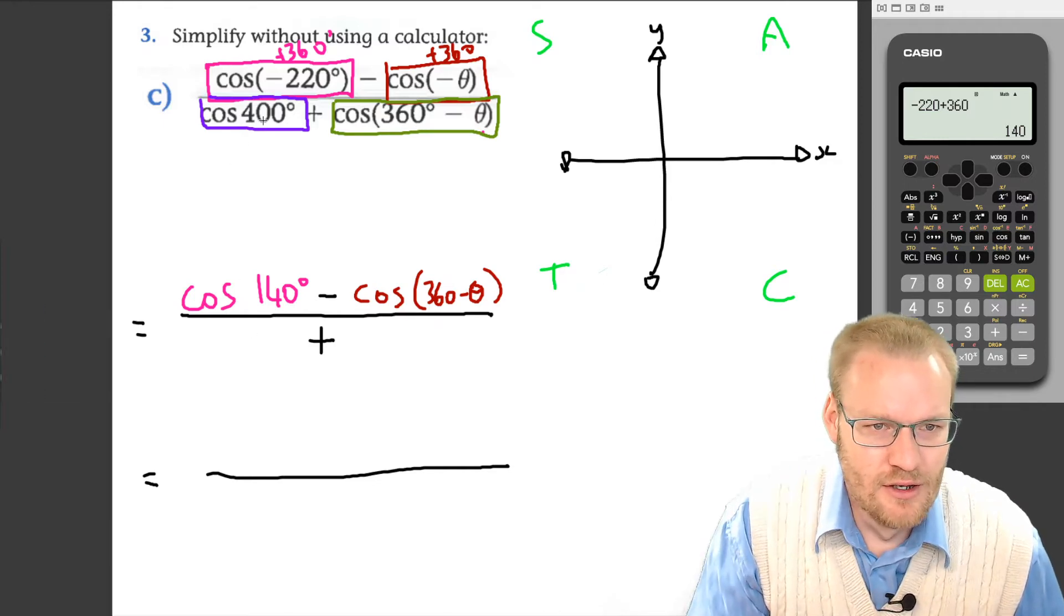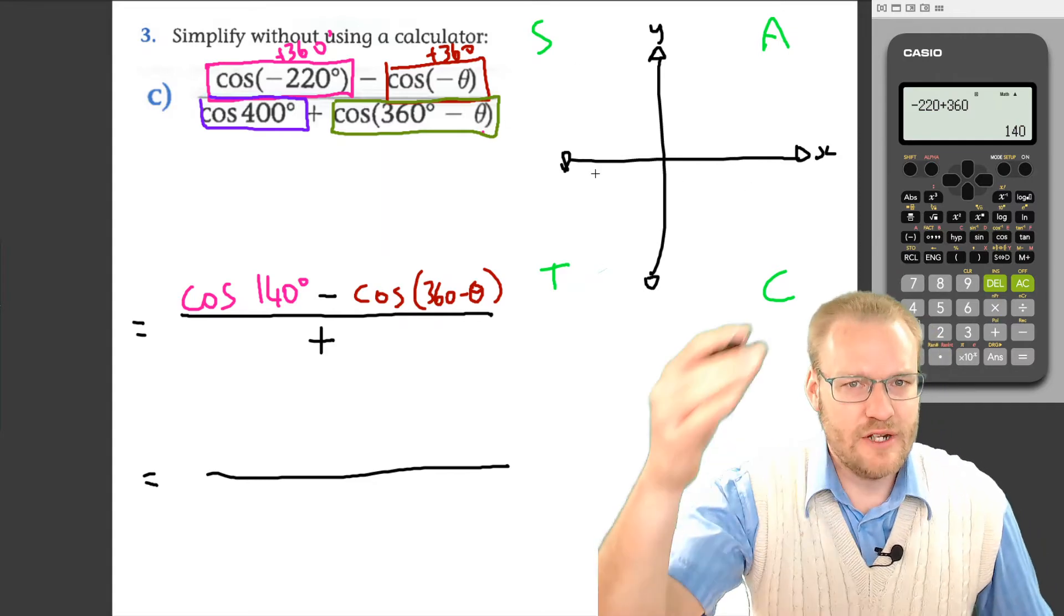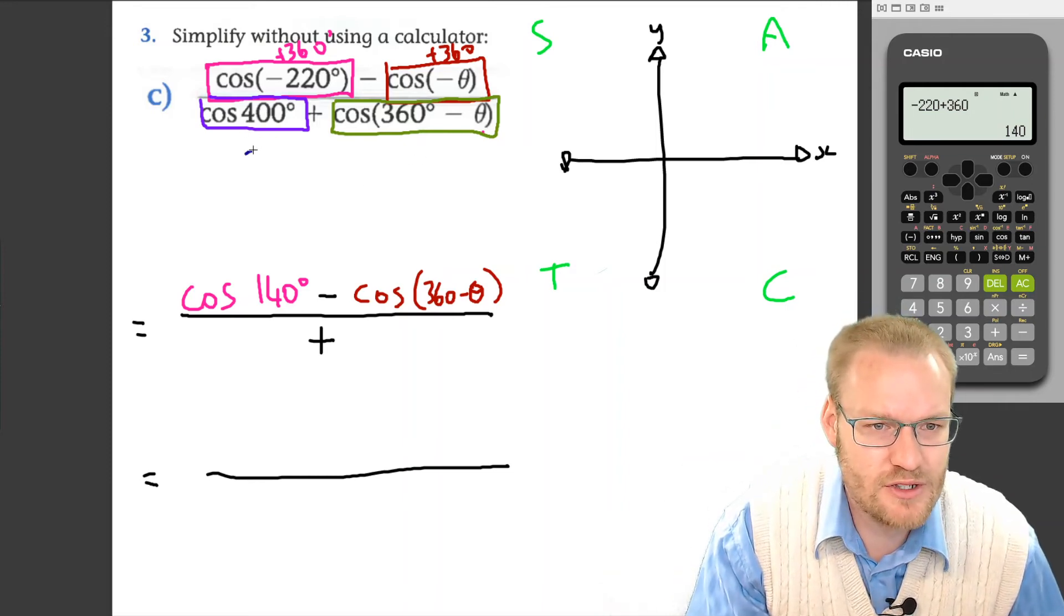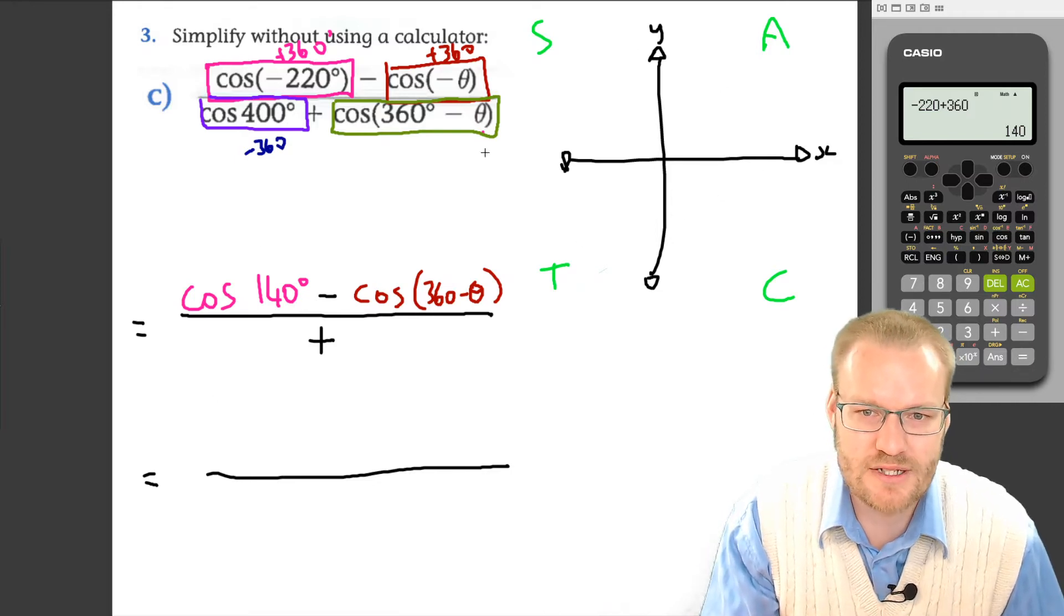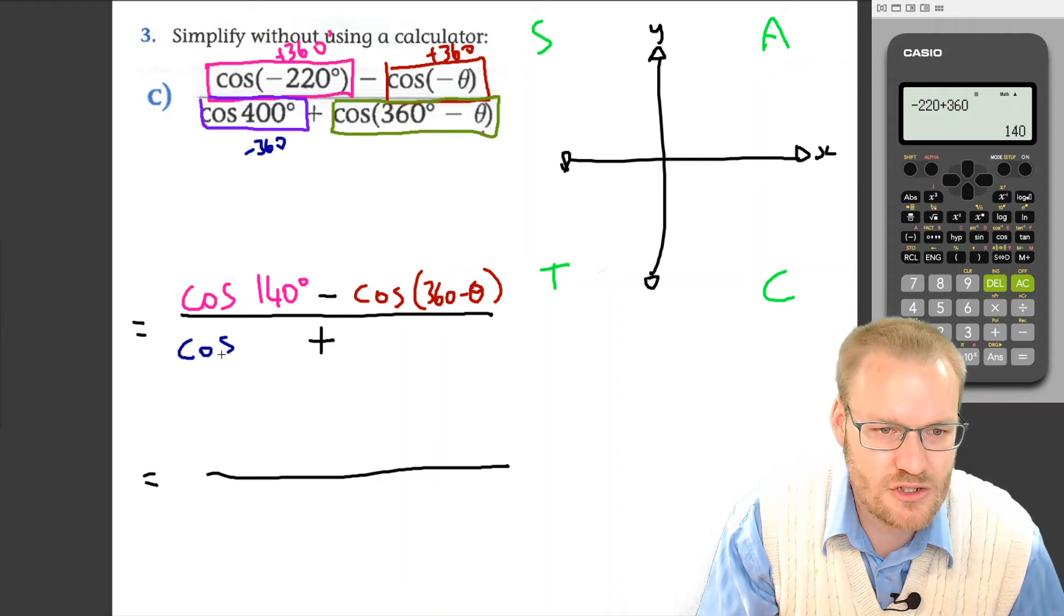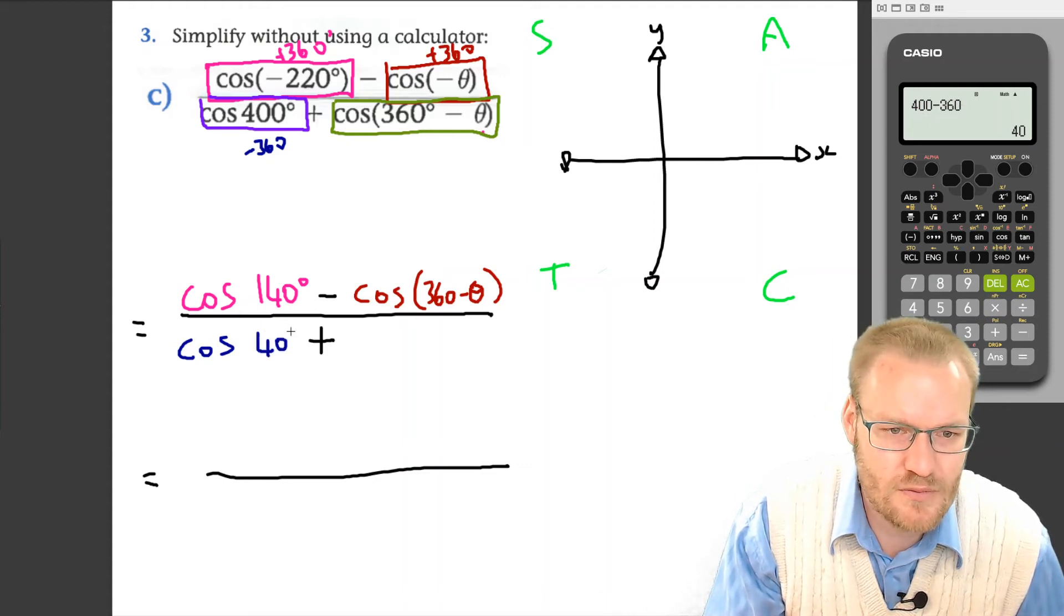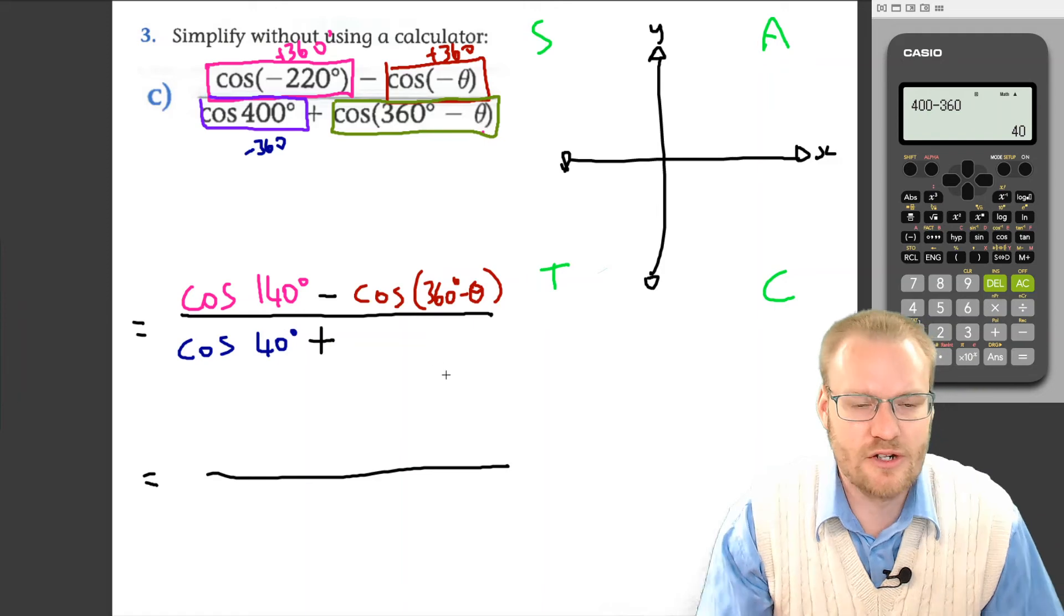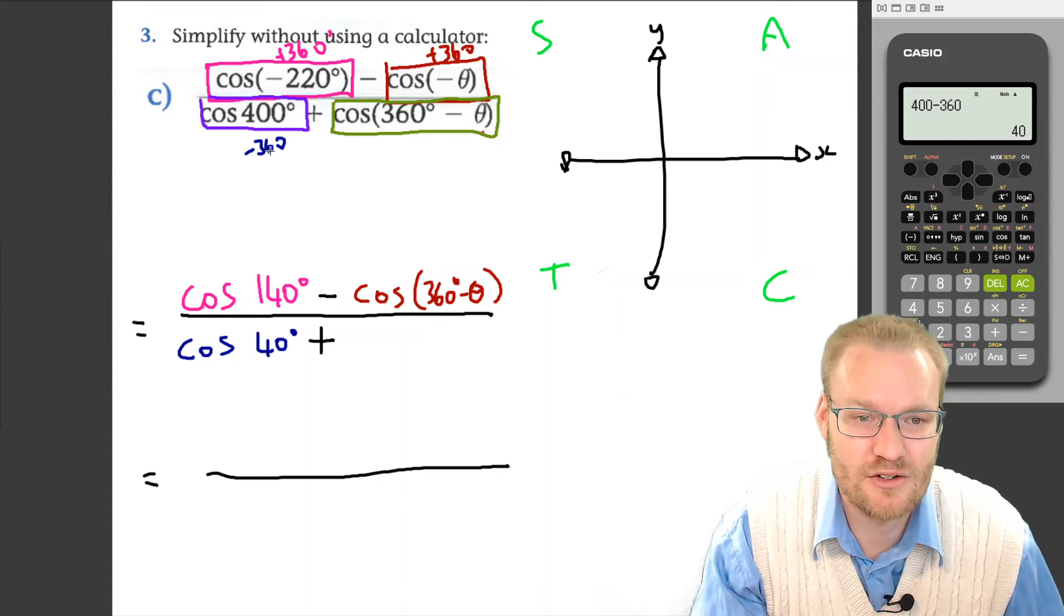Then we've got cos(400°). Well, 400 is bigger than 360, but we know that every 360 degrees all our trig ratios are exactly the same. So if we just subtract 360, we're going to end up somewhere on our four quadrants here between 0 and 360. This is just cos(400° - 360°) which is cos(40°). In other words, every 360 degrees our trig ratios become the same—that's why we can add 360, and in the same way we can just subtract 360.